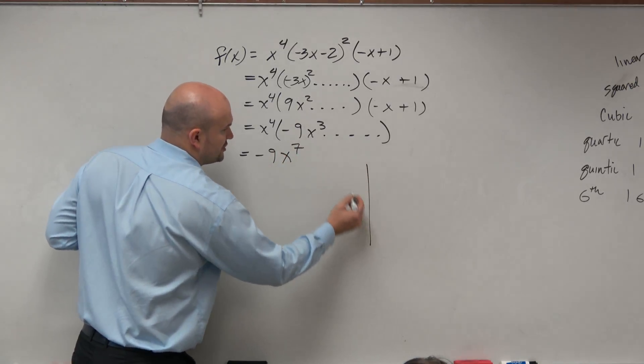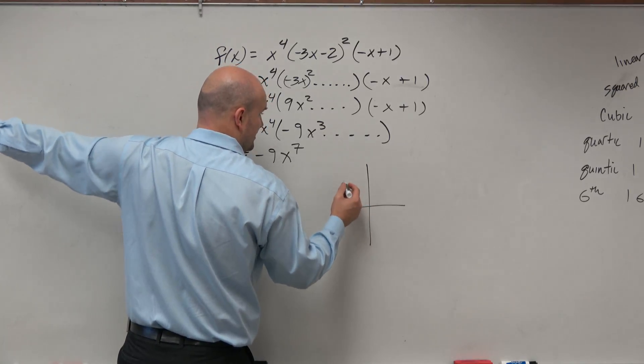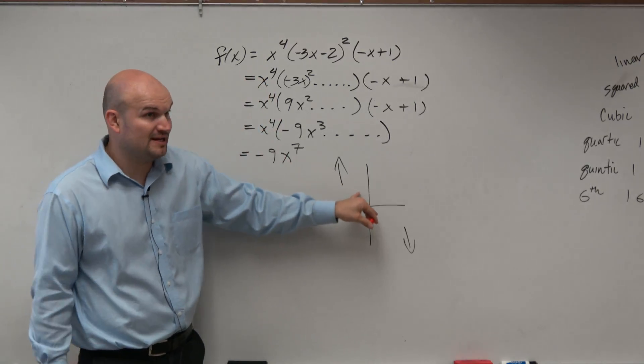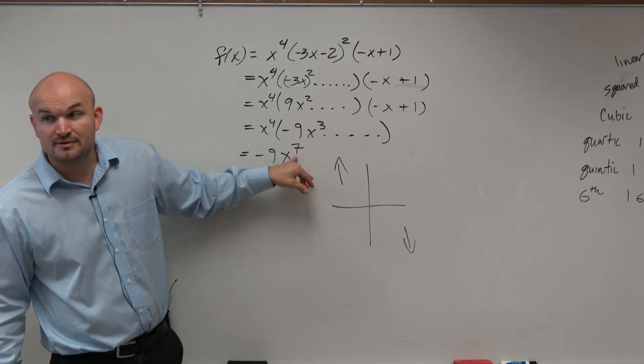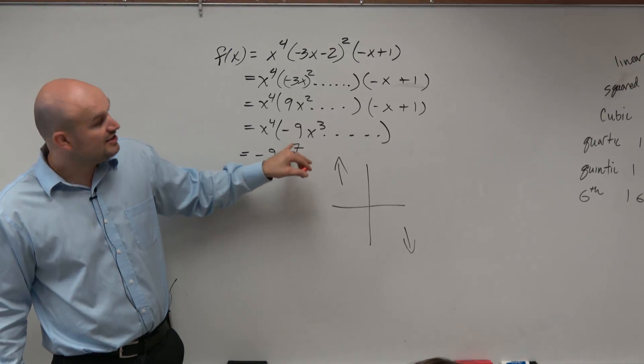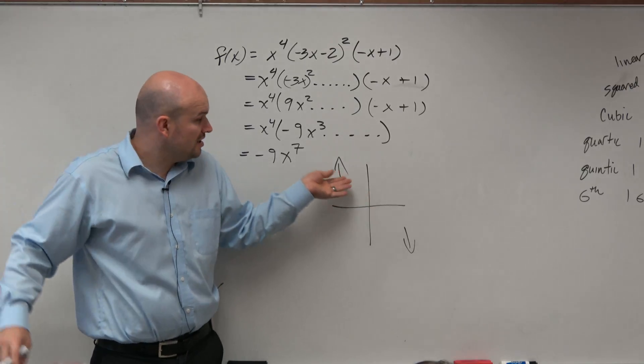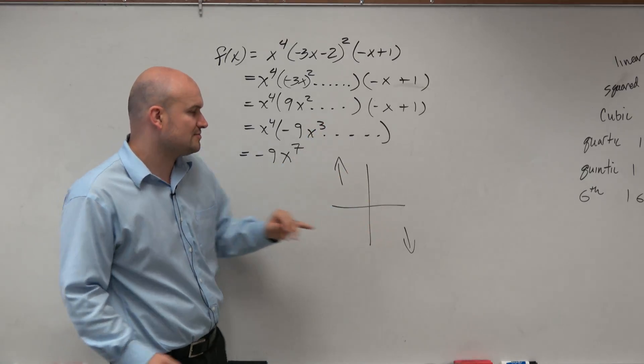So you guys should know that the end behavior is going to look just like the cubic over here. It's going to rise left, fall right. I don't know what's happening. I have no idea what a polynomial to the seventh power looks like. All I know is, like I showed in Desmos, I know whatever happens here doesn't really matter, because the graph rises left, falls right.